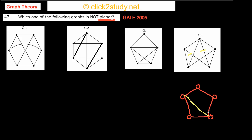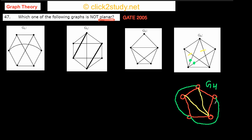After drawing most of the edges, we are left with two remaining edges. Instead of drawing this edge through the inside, I draw it from the outside. And again, instead of drawing this other edge through the inside, I draw it from the outside as well. So G4 is planar — we can draw it with no edges crossing.